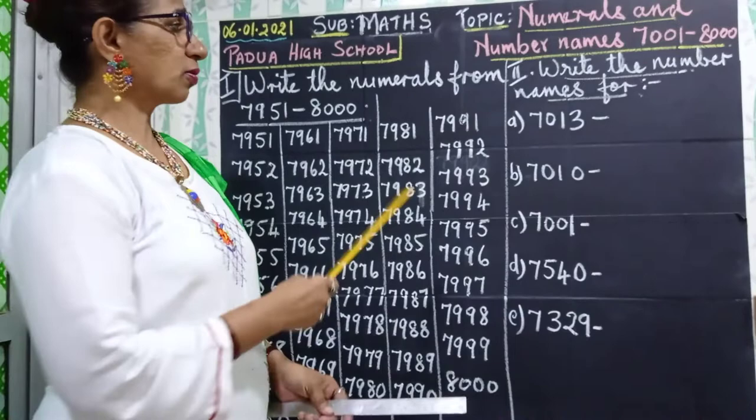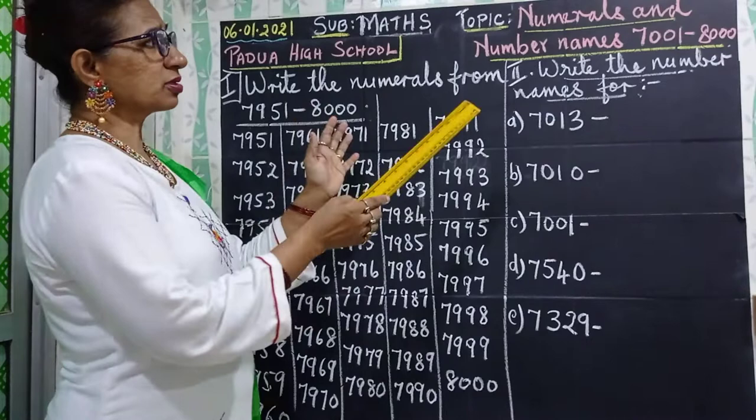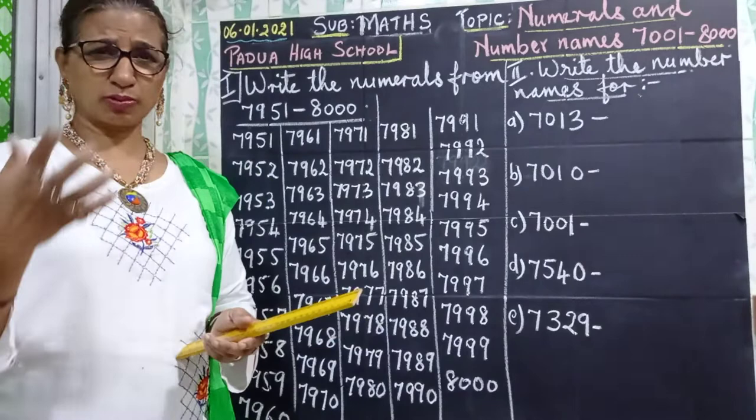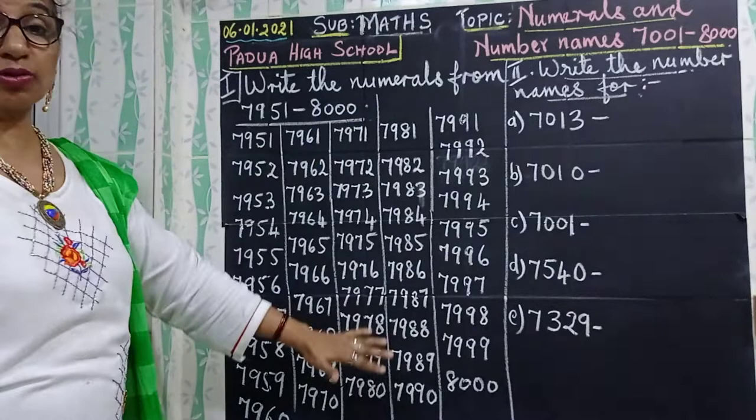First, write the numerals from 7951 to 8000. I have not started right from 7001 because you know how to write that. I have just taken the last 50. So these you have to write in your notebooks, like this in line, just the way I wrote it.